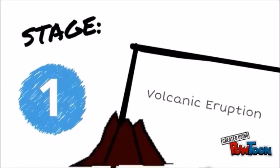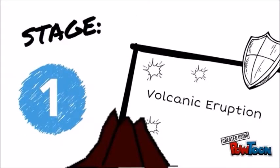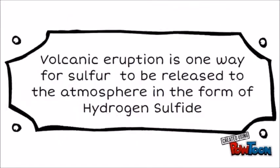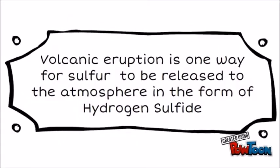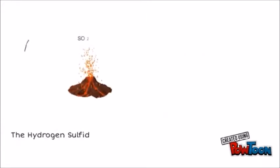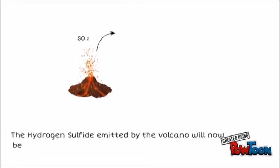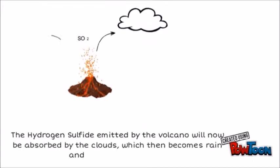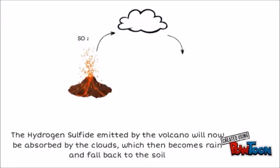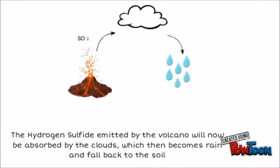Stage 1 is the Volcanic Eruption. Volcanic eruptions are one way for Sulphur to be released in the form of Hydrogen Sulphide. The Hydrogen Sulphide emitted by the volcano will now be absorbed by the clouds, which then becomes rain and falls back into the soil.